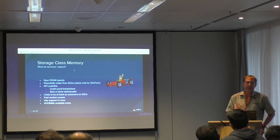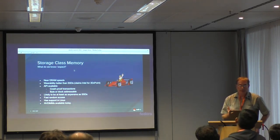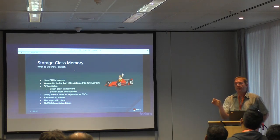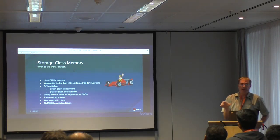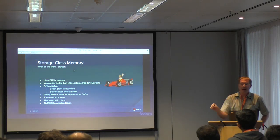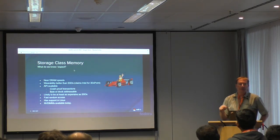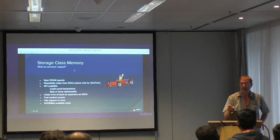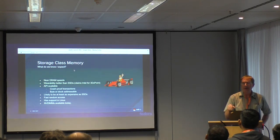However, what does exist today — which is really interesting — is something called an NVDIMM, which is basically DRAM with a battery backup built right into it. If there's a power outage, all the data is copied off the RAM onto flash right there. That gives us the same performance we would see with persistent memory, and it exists today.